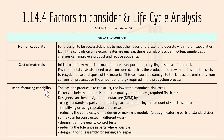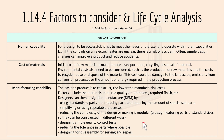Manufacturing capability: the easier a product is to construct, the lower the manufacturing cost, as it requires less workforce. Factors include the materials, required quality and tolerance, and required finish. Designers can design for manufacture, or DFM, by: using standardized parts and reducing the number of specialized parts; simplifying or using repeatable processes; reducing the complexity of the design or making it modular — a design featuring parts of standard sizes so they can be constructed in different ways; designing simple quality control tests; reducing the tolerance in parts where possible; and designing for disassembly for servicing and repair.